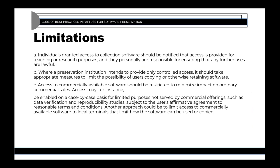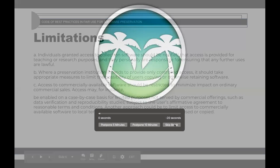These are the limitations that apply to scenario three. First, individuals granted access to collection software should be notified that access is provided for teaching or research purposes, and they are personally responsible for ensuring any further uses are lawful — similar to how memory institutions handle photocopier use. Second, where a preservation institution intends to provide only controlled access, it should take appropriate measures to limit the possibility of users copying or otherwise retaining that software — for example, on an on-site terminal, users shouldn't be able to download it.